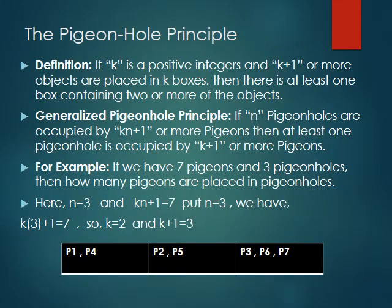The formal definition of the Pigeonhole Principle: if k is a positive integer and k plus one or more objects are placed in k boxes, then there is at least one box containing two or more of the objects.